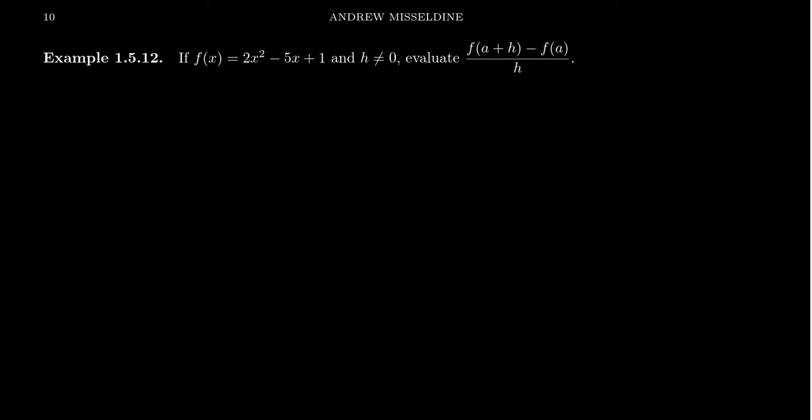So as we try to compute this thing, notice that f(a+h) means plug a+h into the function, so each x gets replaced with an a+h. This would look like, for us, 2(a+h)² - 5(a+h) + 1.